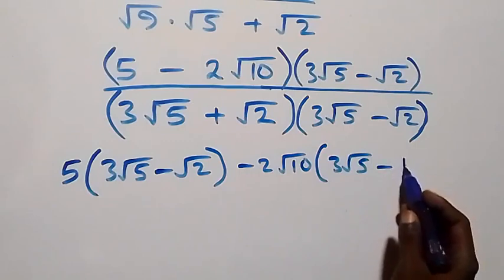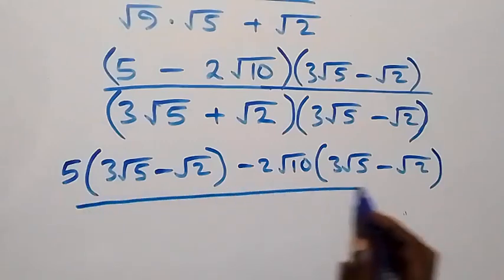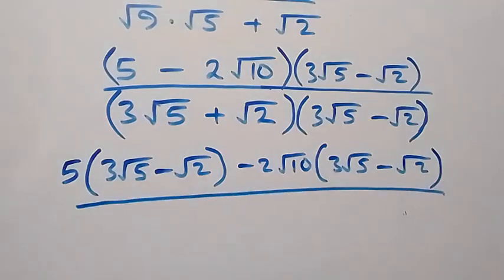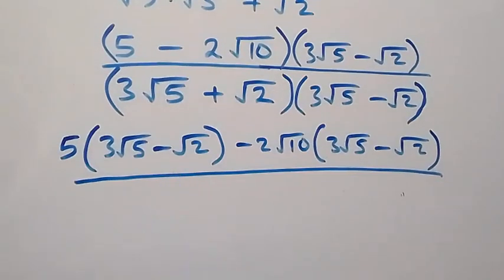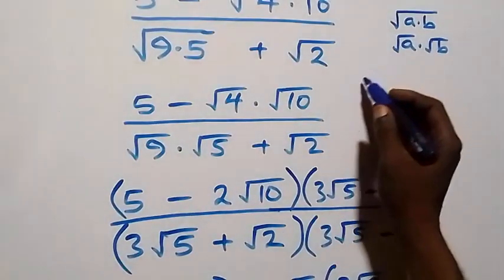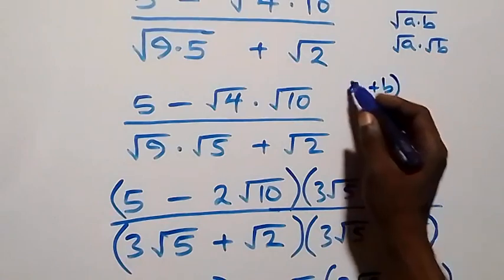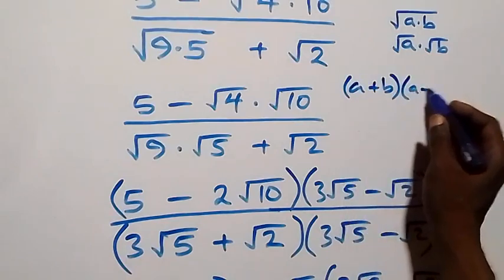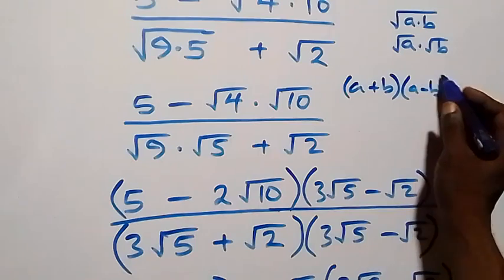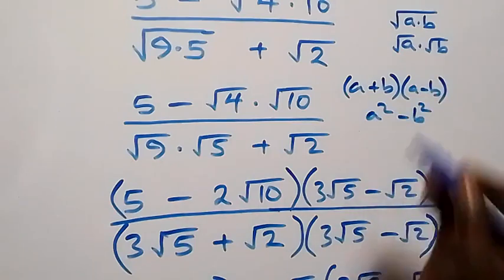In the denominator, this follows from the identity: (a plus b)(a minus b) equals a squared minus b squared.